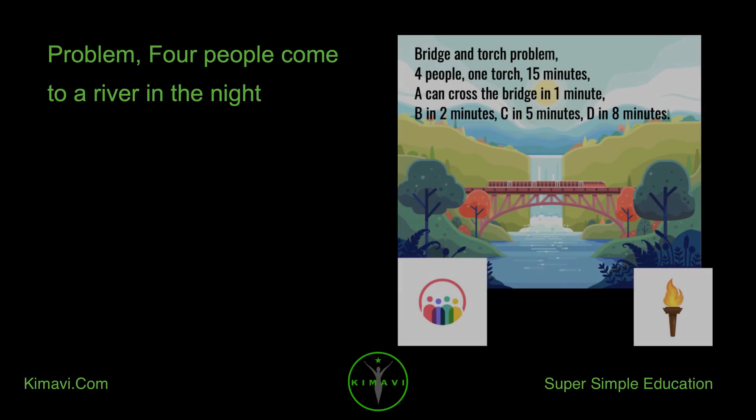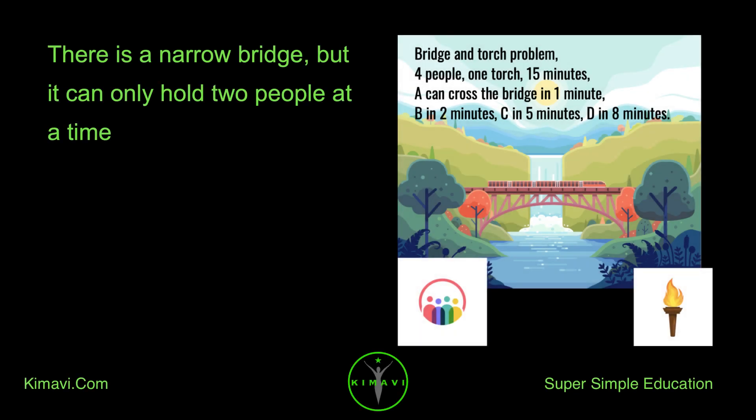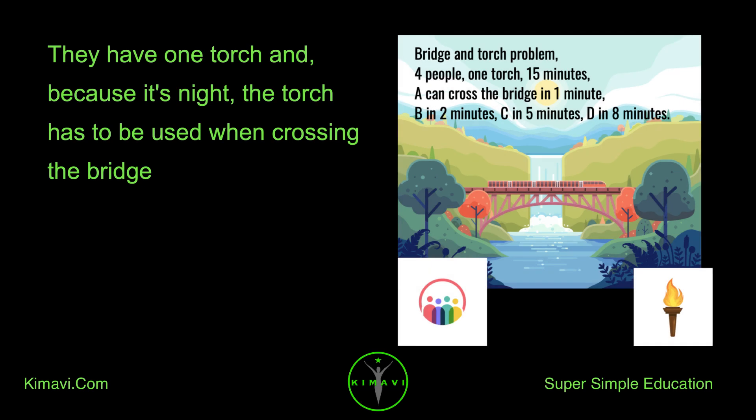Problem. Four people come to a river in the night. There is a narrow bridge, but it can only hold two people at a time. They have one torch and, because it's night, the torch has to be used when crossing the bridge.